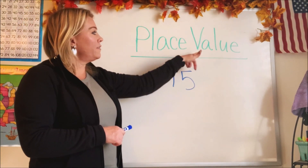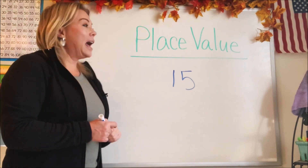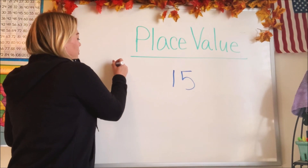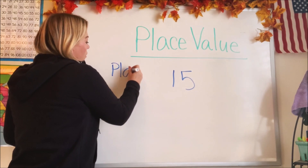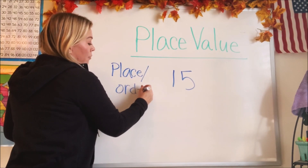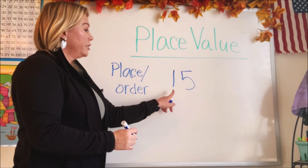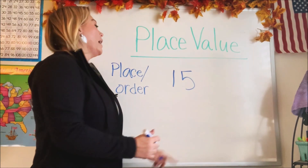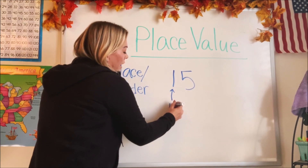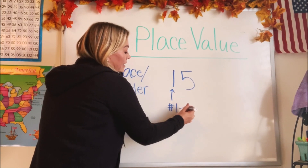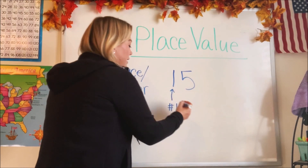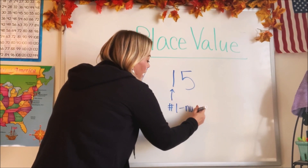Okay, so place value has to do with the order or the place — the place or the order of the numbers. So in this one we have one and five. The number one has to do with the value — one just means one. That's the value, that's the number value.